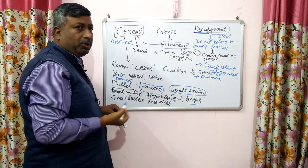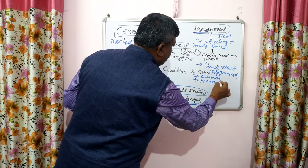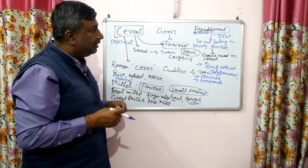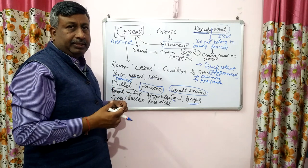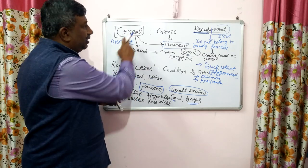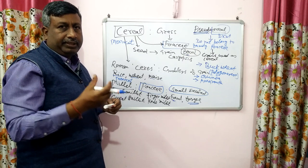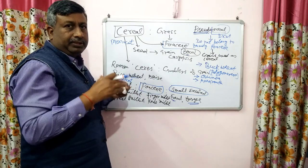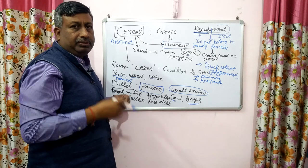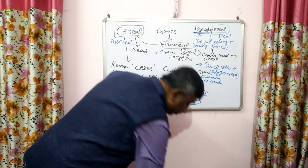Another very good example is quinoa — Chenopodium quinoa — which belongs to family Amaranthaceae. Amaranthus (ramdana) also belongs to the same Amaranthaceae family and is considered a pseudo cereal. So quinoa, buckwheat, and Amaranthus are very good examples of pseudo cereals. These pseudo cereals are commonly consumed during fasting periods — they are allowed during fast, while true cereals are not allowed.